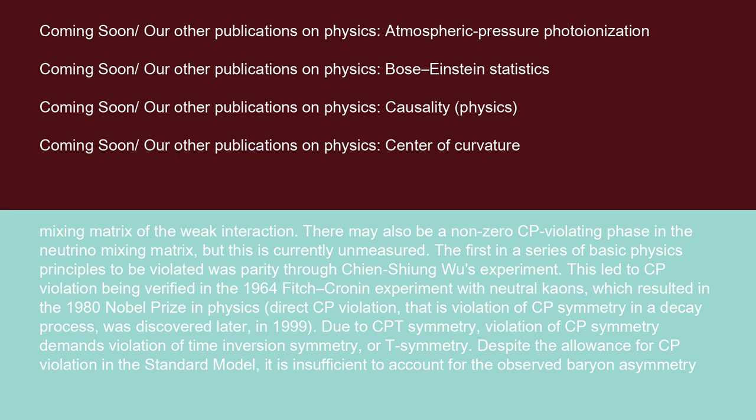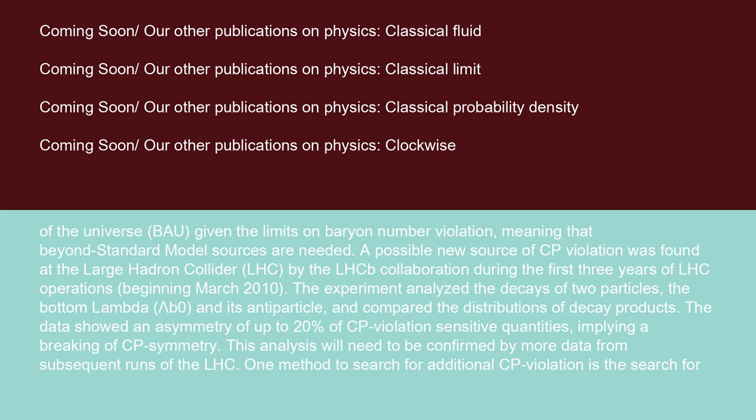Due to CPT symmetry, violation of CP symmetry demands violation of time inversion symmetry, or T-symmetry. Despite the allowance for CP violation in the standard model, it is insufficient to account for the observed baryon asymmetry of the universe (BAU) given the limits on baryon number violation, meaning that beyond-standard model sources are needed.